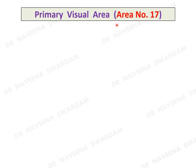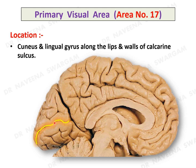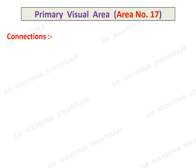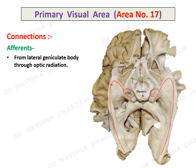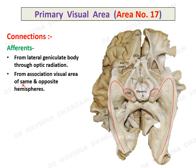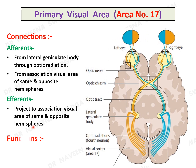Primary visual area, area 17: it occupies the medial surface of the occipital lobe along the lips and walls into the depth of the calcarine sulcus, which lies between the cuneus above and the lingual gyrus below. It receives major afferents from the lateral geniculate body through optic radiation, and also from the association visual area of the same and opposite hemispheres, to which efferents also project. It registers the opposite field of vision from both eyes.